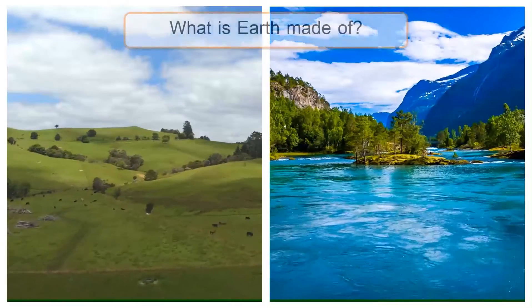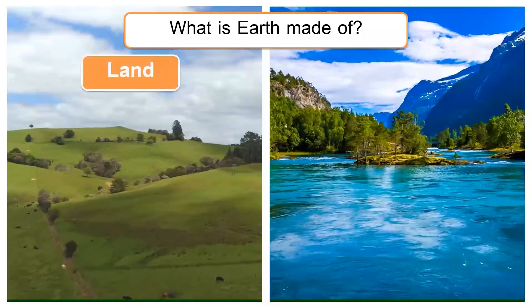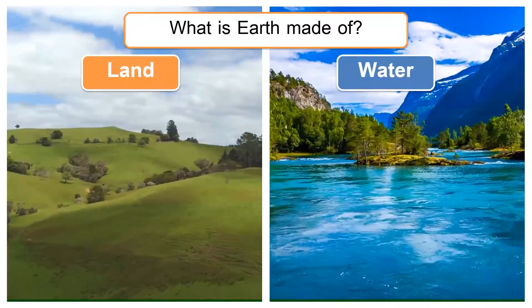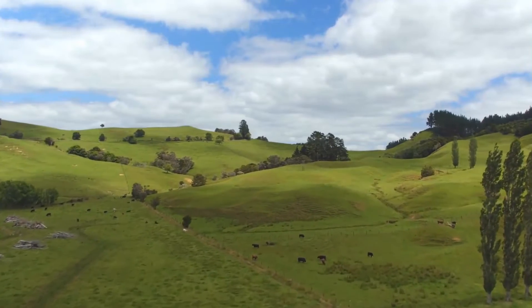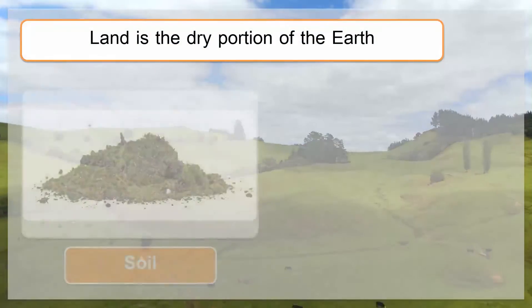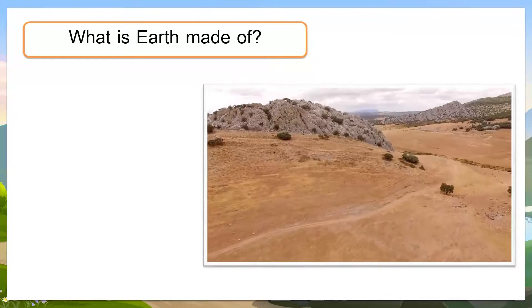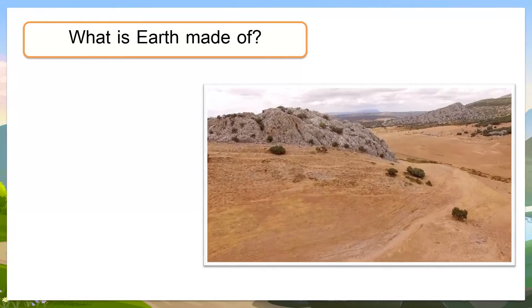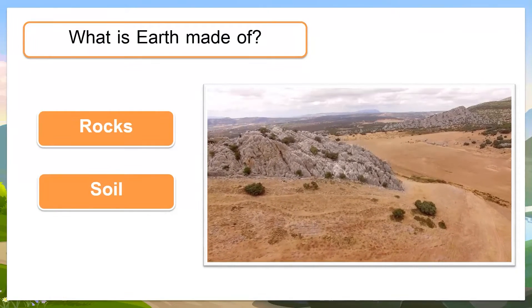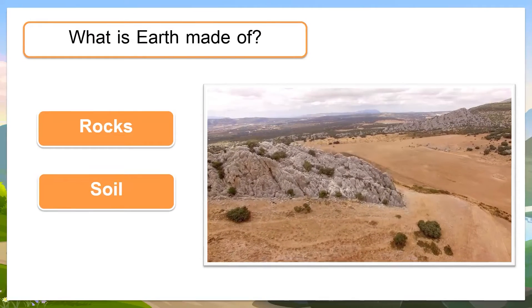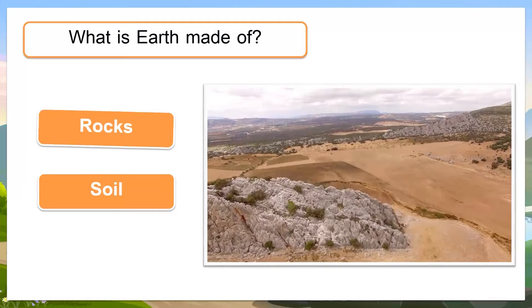What is Earth made of? Earth is made of land and water. This is the land portion and it is dry. It contains soil and rocks. What is land made of? Land is made of rocks and soil. Is land made of water? No, it is only made of rocks and soil.